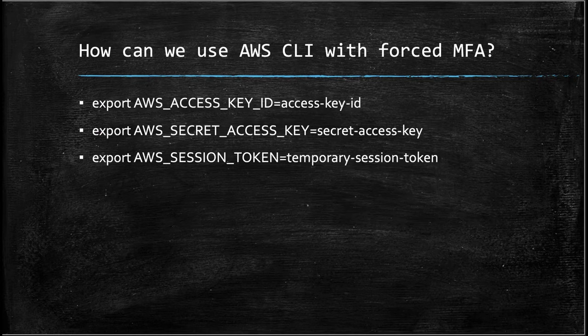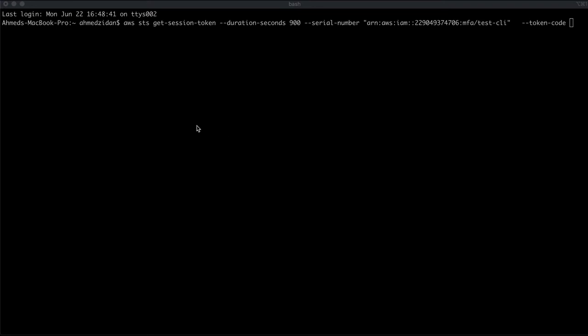To use those credentials, you need to export them in your current terminal session: export AWS_ACCESS_KEY_ID, export AWS_SECRET_ACCESS_KEY, and export AWS_SESSION_TOKEN. Let me show you how. In my terminal I'll call the get-session-token API: AWS STS get-session-token, I'll put the duration in seconds, and my serial number.